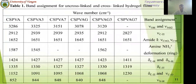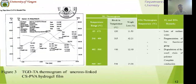Let me go to the next section. This is a band assignment for uncrosslinked and crosslinked hydrogels with the previous explanation. Finally, TGA analysis. TGA analysis shows that the uncrosslinked and crosslinked CS-PVA hydrogel is a full degrading nature.